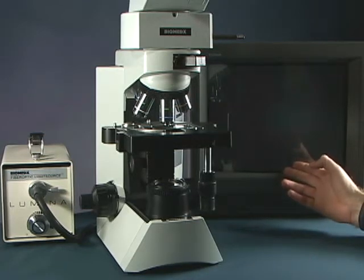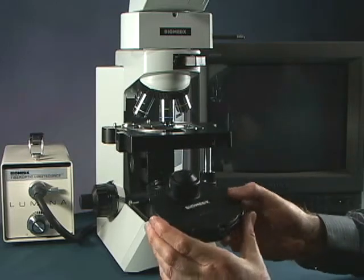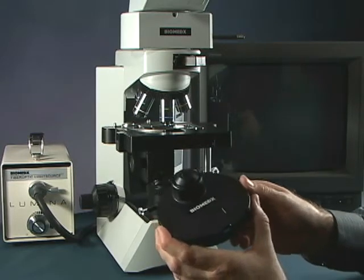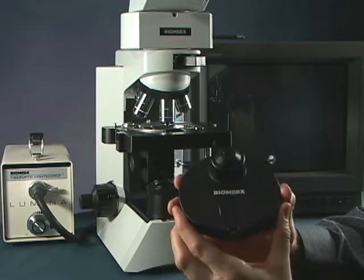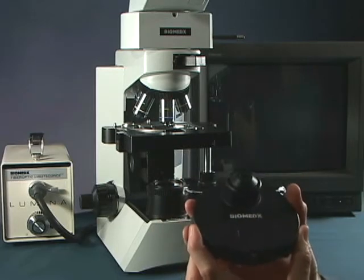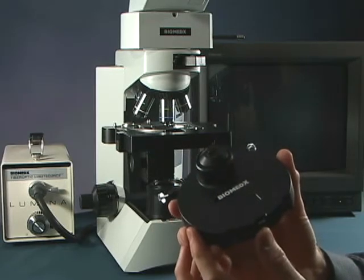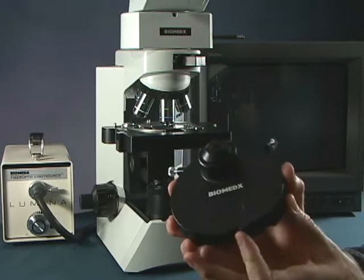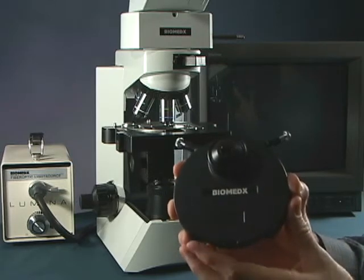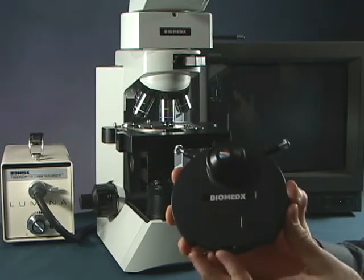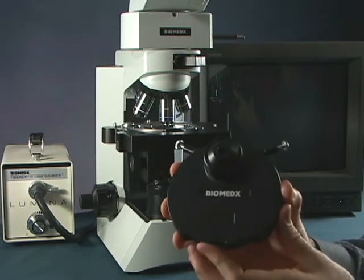What we want to be concerned with now is properly mounting our condenser. This is a universal turret condenser. It's one of the nicest condensers you can have because of its multipurpose capacity. By simply rotating the turret, we can get bright field and dark field and phase contrast and even a three-dimensional perspective.